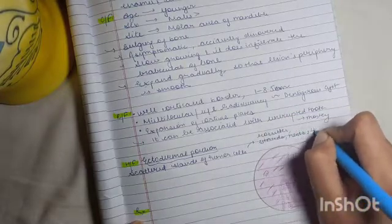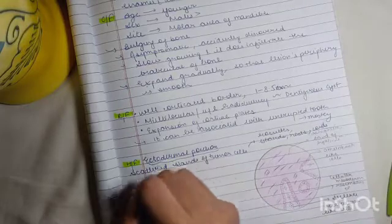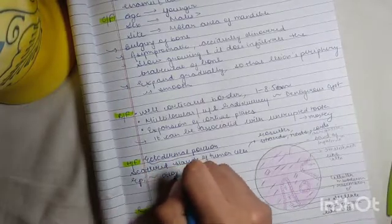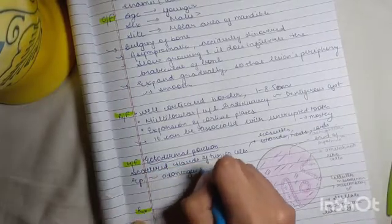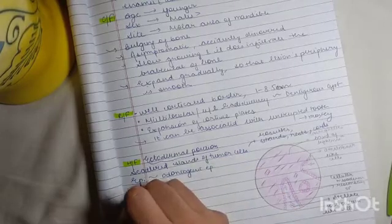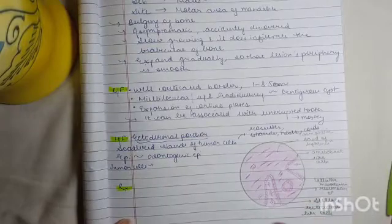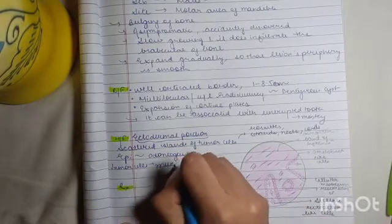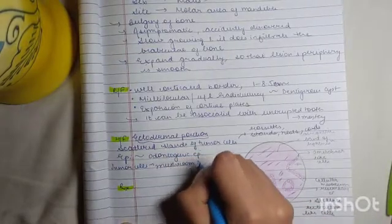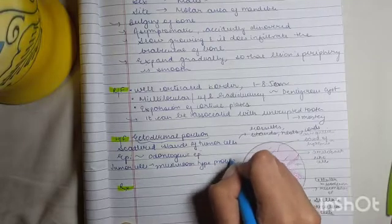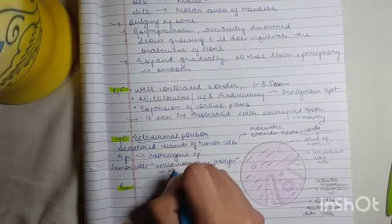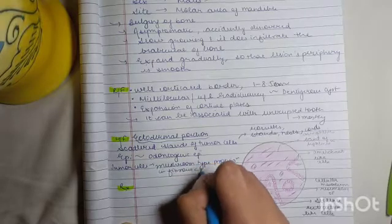They also form cords. The epithelium resembles the odontogenic epithelium. The tumor cells show mushroom-type proliferation in fibrous connective tissue stroma. In the mesenchymal portion,